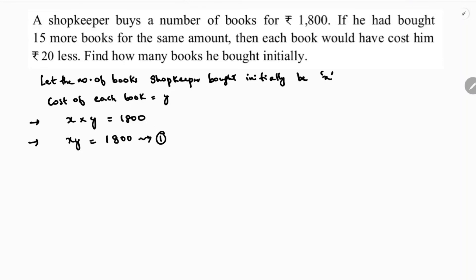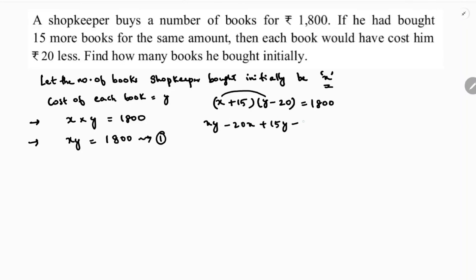Now, they said if he had bought 15 more books, the number of books becomes x plus 15. For the same amount of 1800, each book would have cost 20 rupees less. So multiplying (x + 15) into (y - 20) equals 1800: xy - 20x + 15y - 300 = 1800.